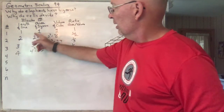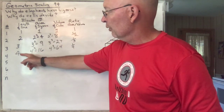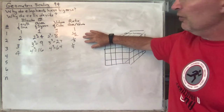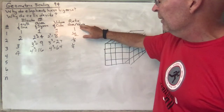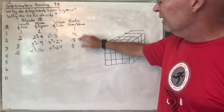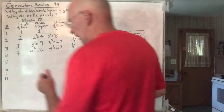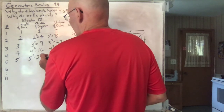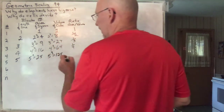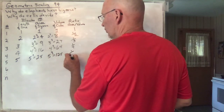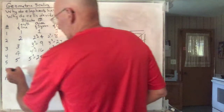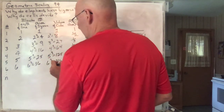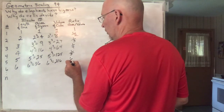Start noticing a pattern here. As the number grows, the area grows faster than the length, and the volume grows faster than the area. The ratio of area divided by volume keeps decreasing as we go. For five, the area is five squared which is 25, the volume is five cubed which is 125, and the ratio is 25 over 125, which is one fifth. For six, you get six squared which is 36, six cubed which is 216, and the ratio of area over volume is one sixth.